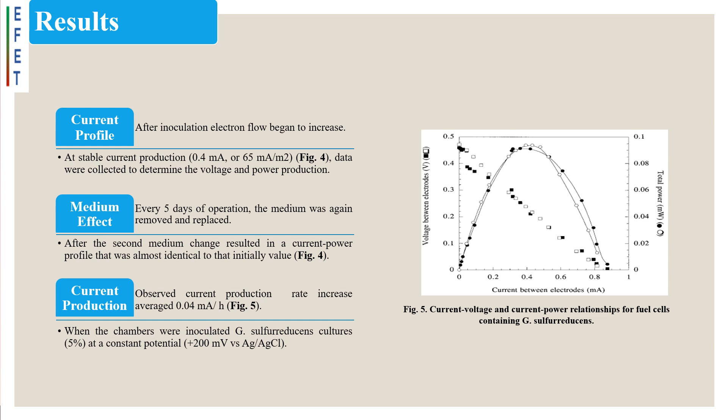When the chambers were inoculated with 5% Geobacter sulfereducens cultures at a constant potential of plus 200 millivolts versus silver by silver chloride, current production rate increased, averaging 0.04 milliampere per hour.